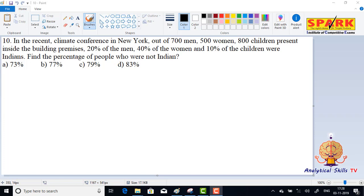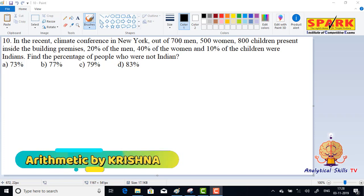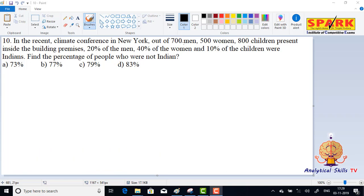In the most attendees in all, there are 700 men, 500 women, and 800 children. Of the men, 20 percent; of the women, 40 percent; of the children, 10 percent are Indians. But the question asks to find the percentage of people who are not Indians.